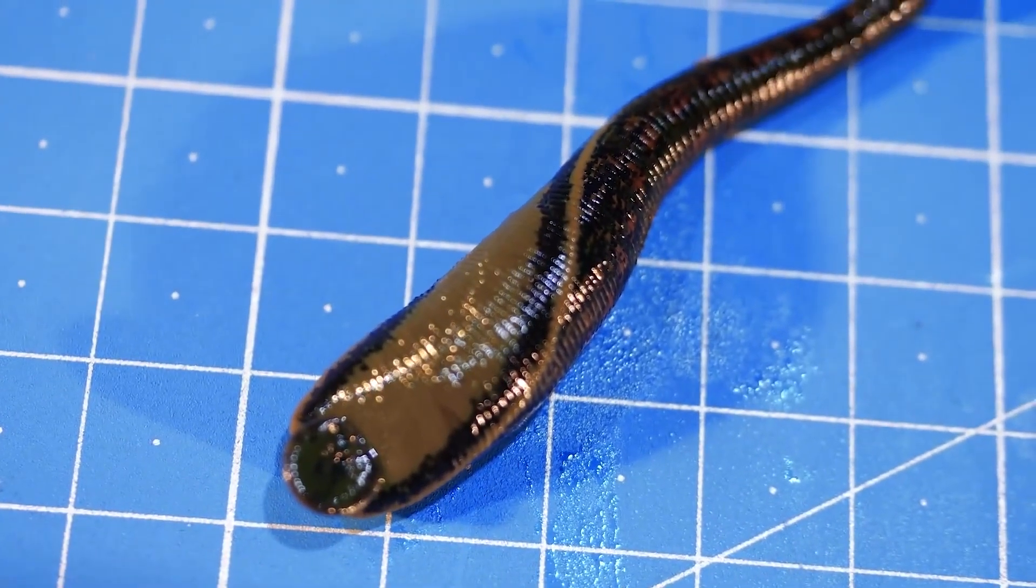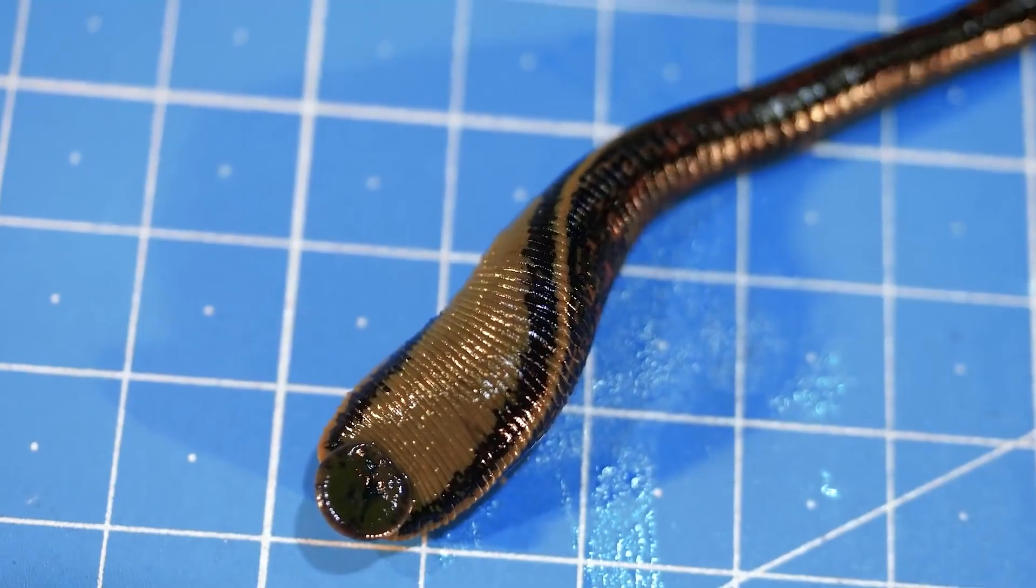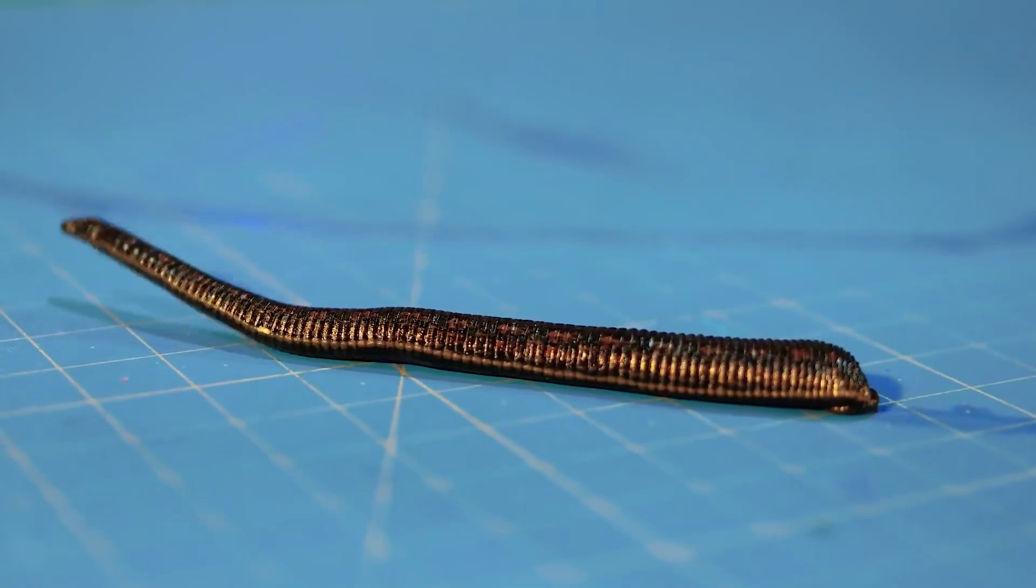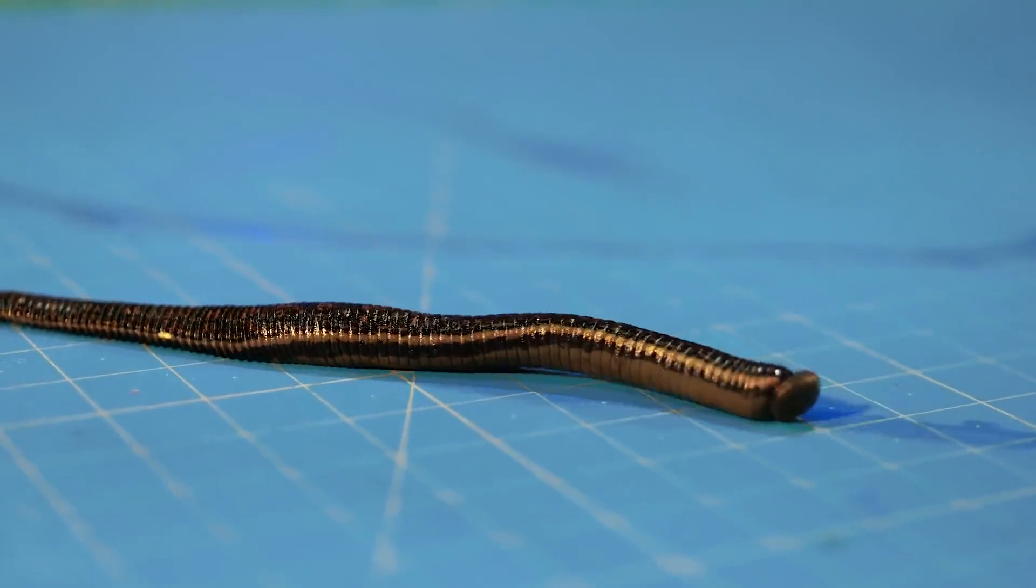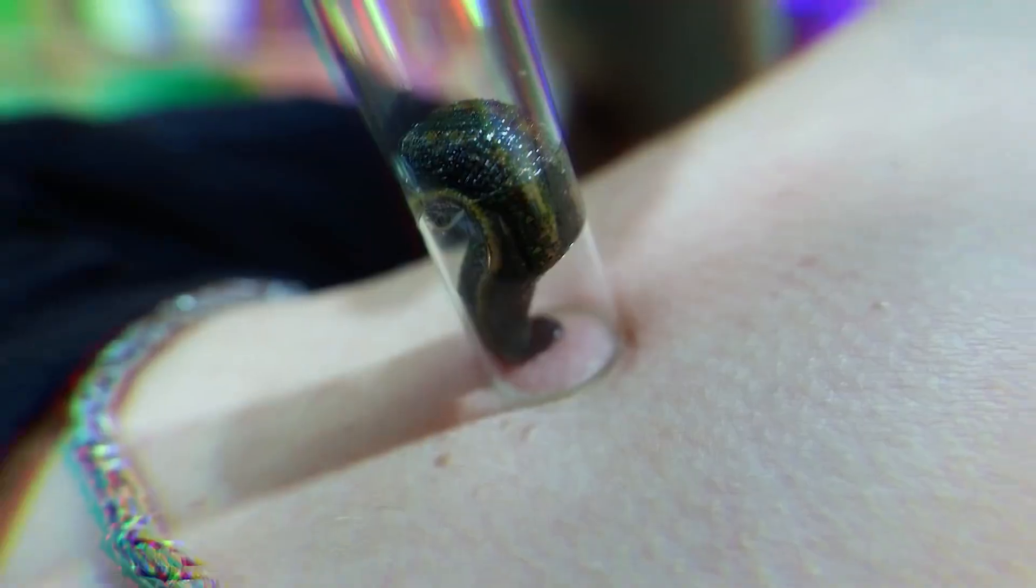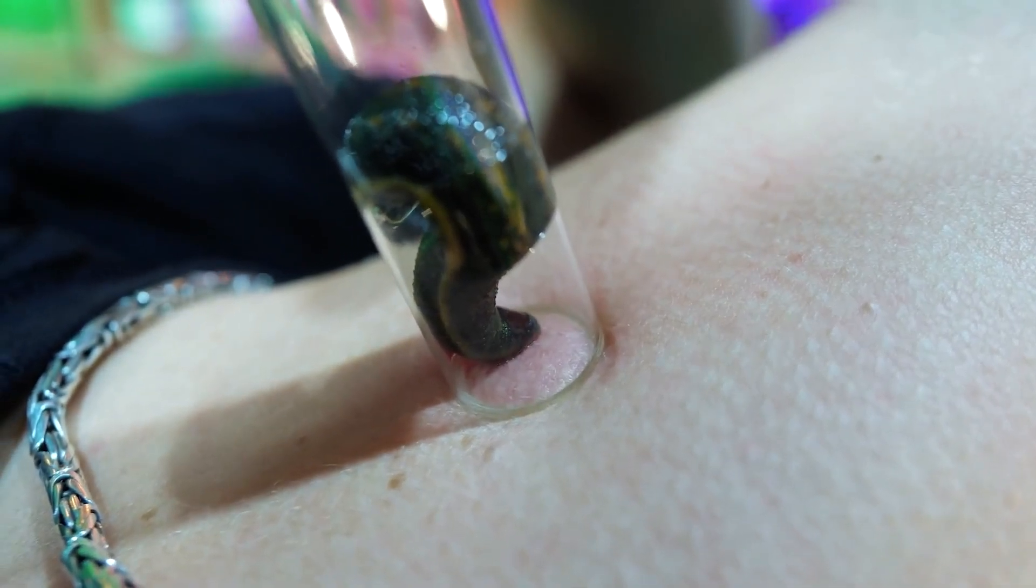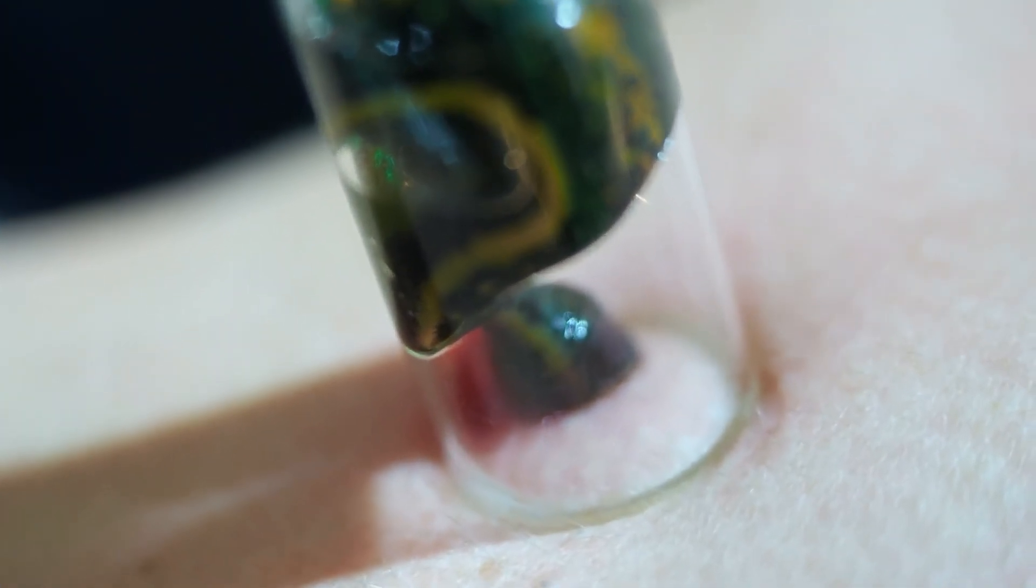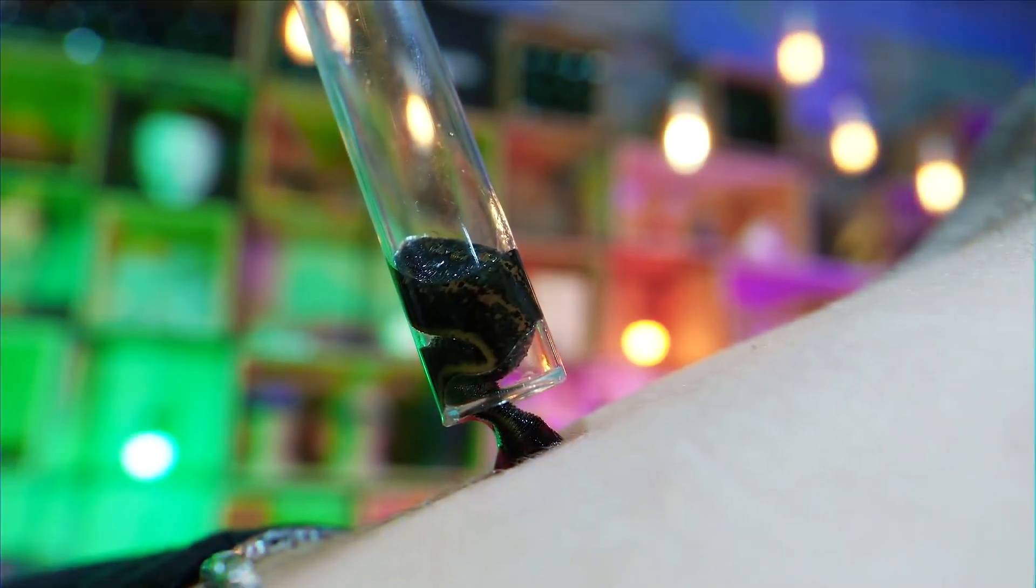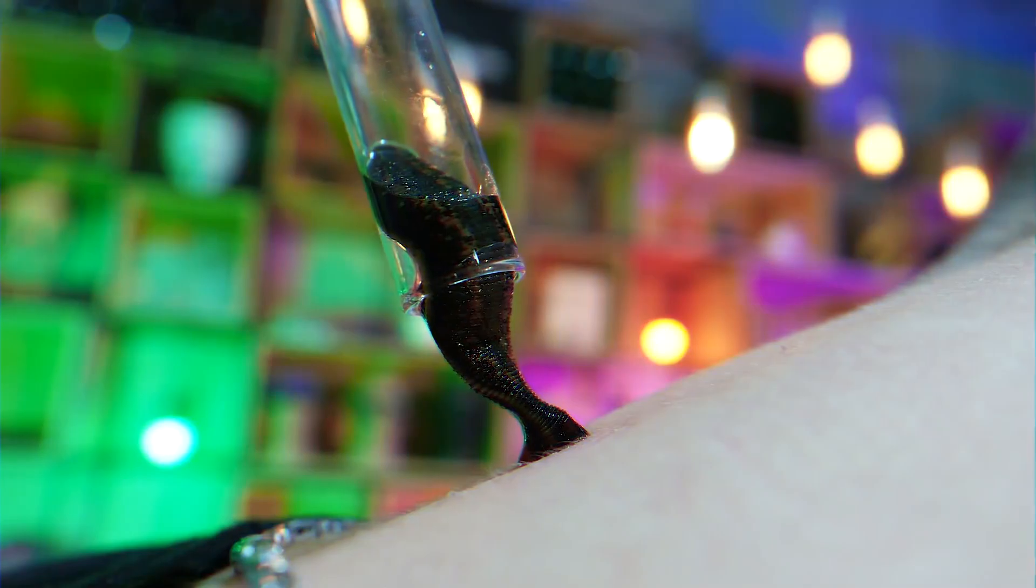The first leech is the luckiest of all in terms of blood quality. She will get Vitya's blood—a man who doesn't smoke, who last drank alcohol six months ago, who doesn't know what drugs are. The leech is already ready, so let's begin. You can see how it's stuck to the skin.